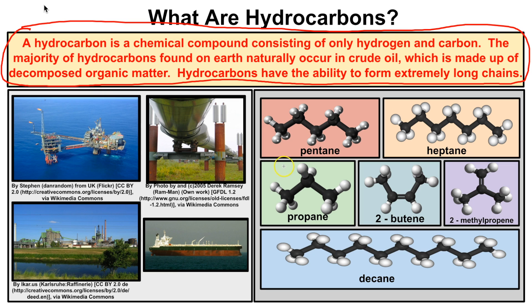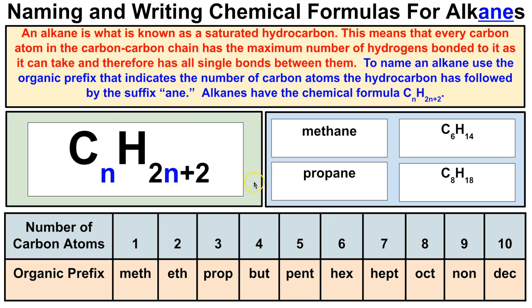The first type of hydrocarbon we are going to learn how to name is called an alkane. An alkane is what is known as a saturated hydrocarbon. This means that every carbon atom in the carbon-to-carbon chain has the maximum number of hydrogens bonded to it and therefore has all single bonds between the carbon atoms. To name alkanes, use the organic prefix that indicates the number of carbon atoms, followed by the suffix '-ane'. Alkanes typically have the chemical formula CₙH₂ₙ₊₂.